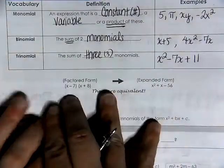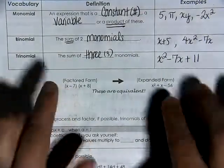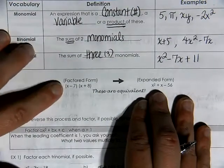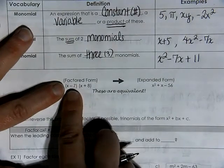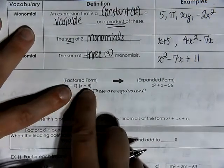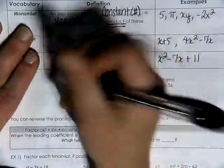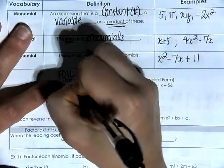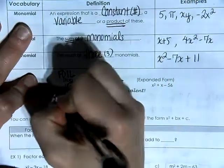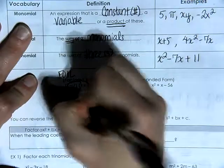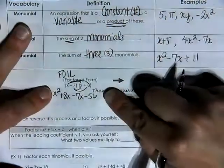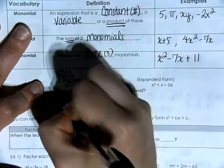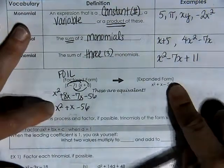What we're going to do is go from factored form to expanded form whenever we are factoring. These two expressions are equal to each other. We're going to FOIL — First, Outside, Inside, Last — with these two parentheses. So I multiply x times x to get x squared, x times 8 gives plus 8x, negative 7 times x gives minus 7x, and negative 7 times 8 gives minus 56. I have four terms, and combining like terms I end up with x squared plus x minus 56.